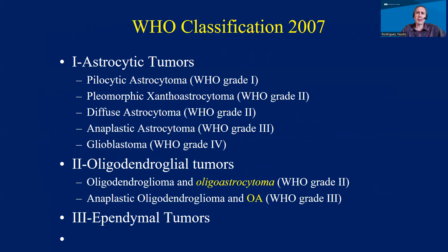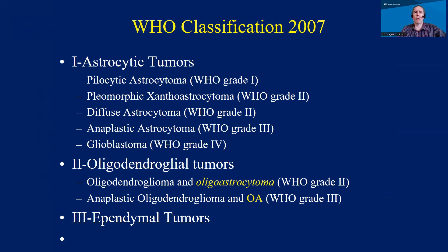In 2007, there was a fourth classification of brain tumors, and it was pretty straightforward. There were major categories that hadn't changed for a long time, still based on what we see under the microscope and occasionally with the use of immunohistochemical or special stains.